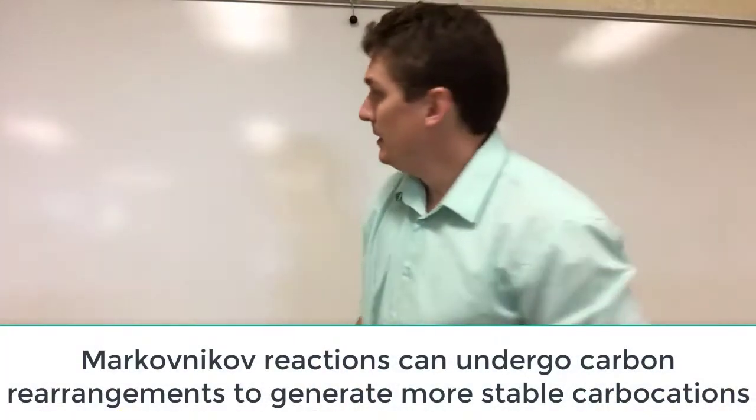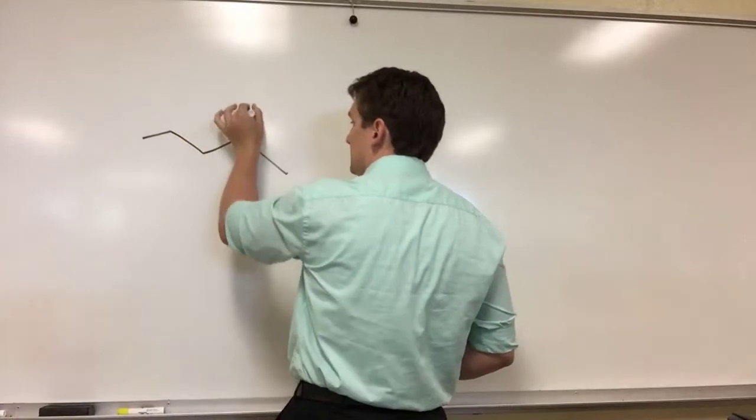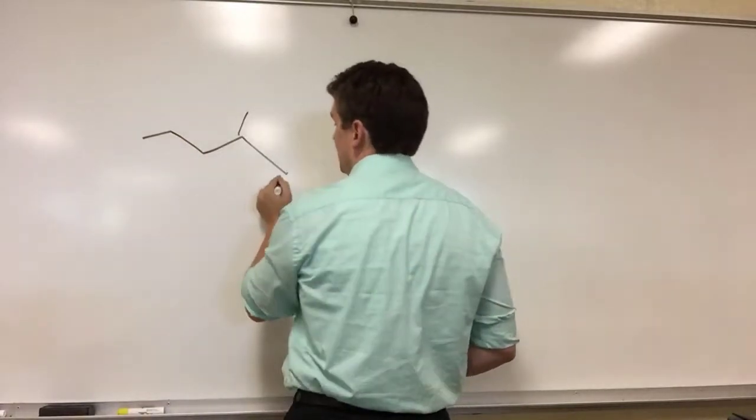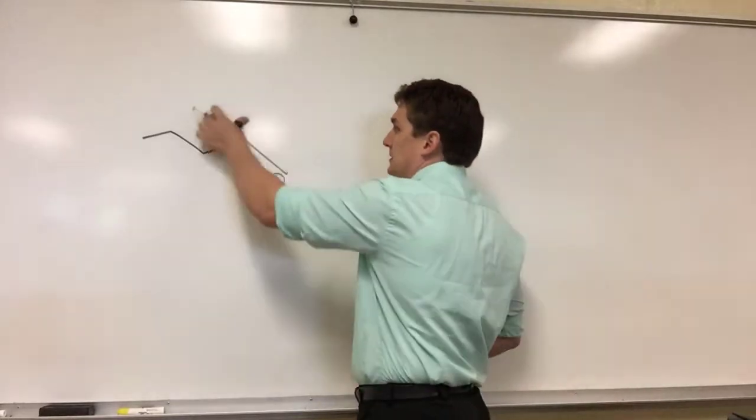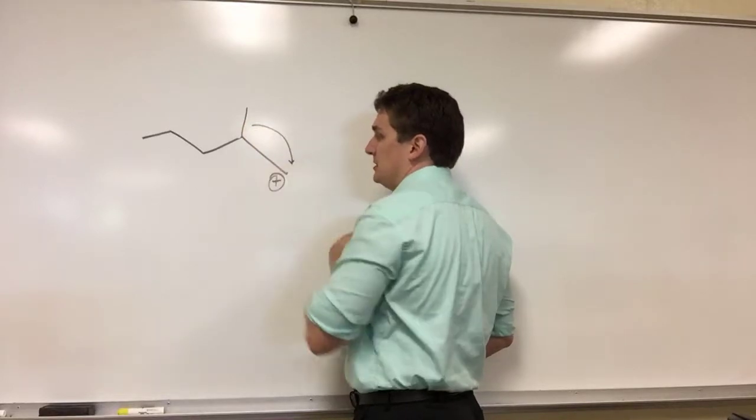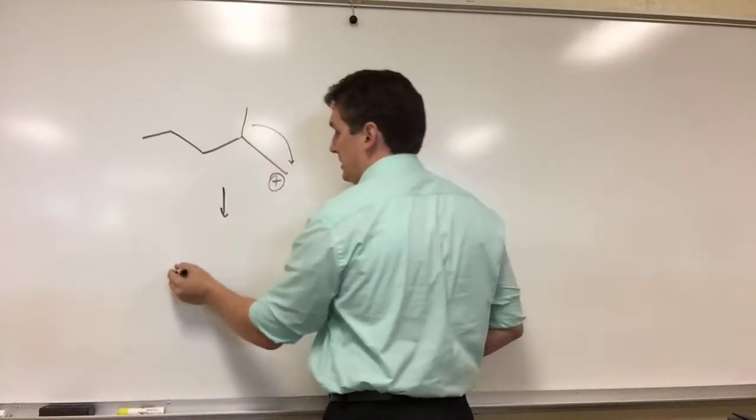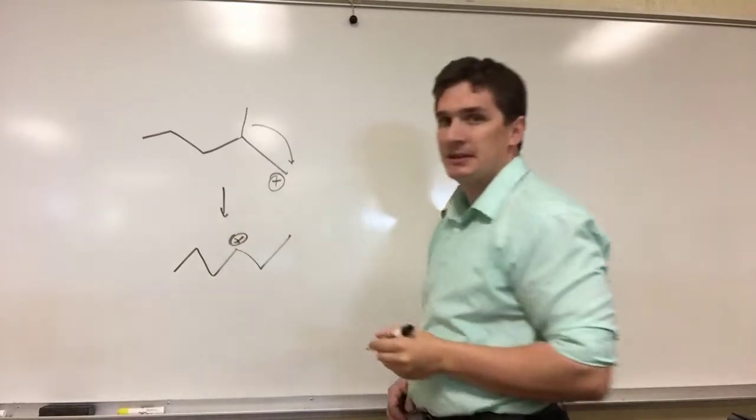So if we look at something like this, let's say we put our carbocation on the furthest carbon. What can happen is that as this is a primary carbon, this carbon can migrate over and what we'll end up getting is something that looks like this.